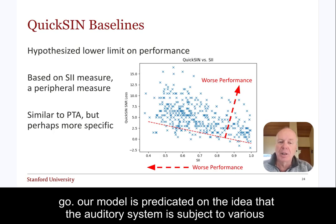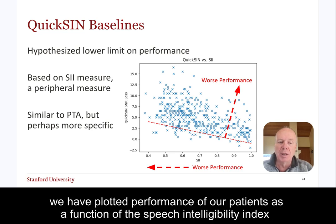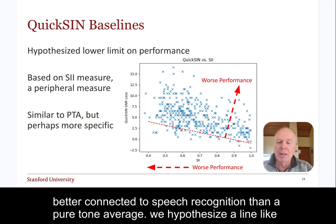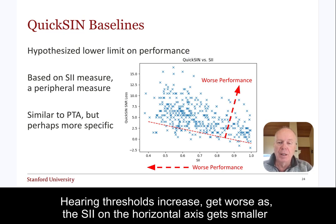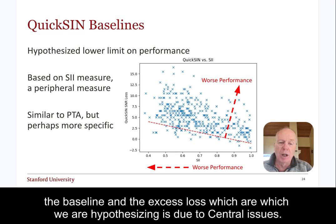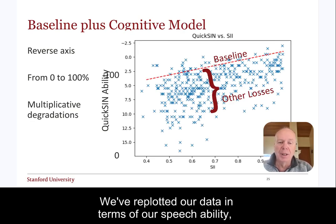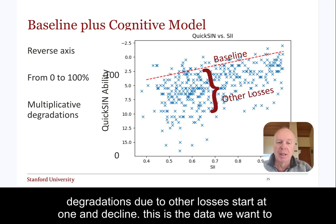Our model is predicated on the idea that the auditory system is subject to various kinds of degradations, all of which can only hurt performance on a test like QuickSyn. We have plotted performance over patients as a function of the speech intelligibility index, or SII, because it includes information about the relative thresholds that are perhaps better connected to speech recognition than a pure tone average. We hypothesize a line like the red dashed line indicates the bottom line of performance as a function of threshold. Hearing thresholds get worse as the SII on the horizontal axis gets smaller, and speech and noise performance is worse with increasing SNR loss. We want to model the baseline and the excess loss, which we hypothesize is due to central issues.